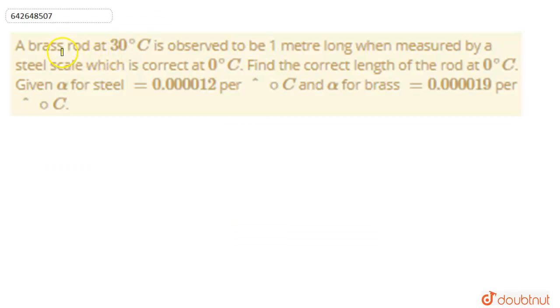Hello everyone. Our brass rod at 30 degrees Celsius is observed to be 1 meter long when measured by a steel scale which is correct at 0 degrees Celsius. Find the correct length of the rod at 0 degrees Celsius. Given alpha of steel is 0.000012 per degree Celsius, and alpha of brass is 0.000019 per degree Celsius inverse.